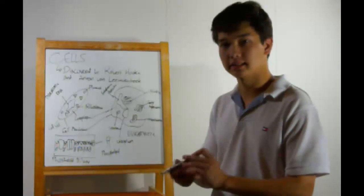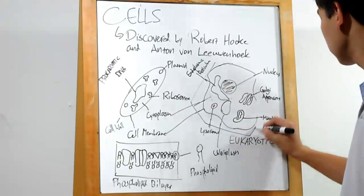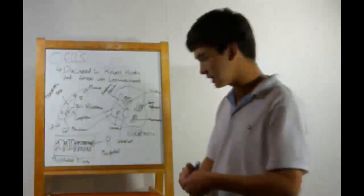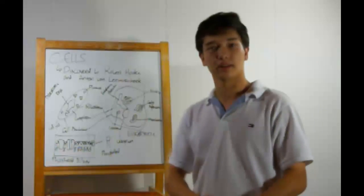Additionally, plant cells will have a cell wall. This is similar to the one in bacteria, but the material is different. Whereas bacterial cell walls are made up of peptidoglycan, plant cell walls are made up of something known as cellulose.